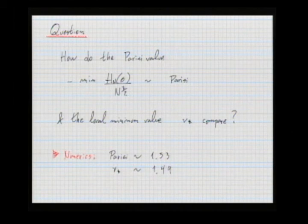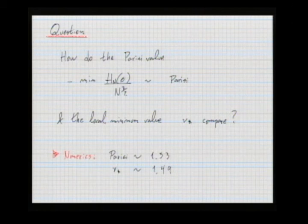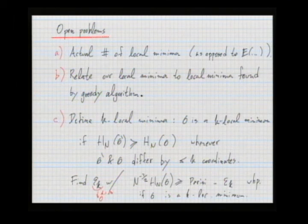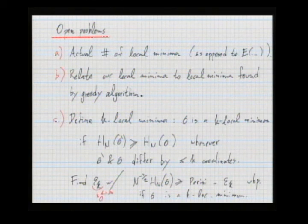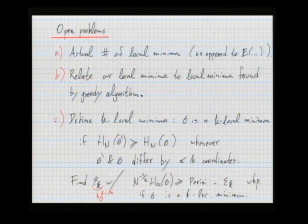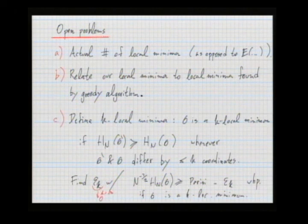Moving to open problems: first, we only have bounds on the expected number of local minima — we don't know whether these are typical values. In principle it's a second moment calculation, but it's quite difficult. Second, we want to relate the local minima found by the greedy algorithm to the uniformly random local minima we analyze — at this point we don't know whether they are similar or different.